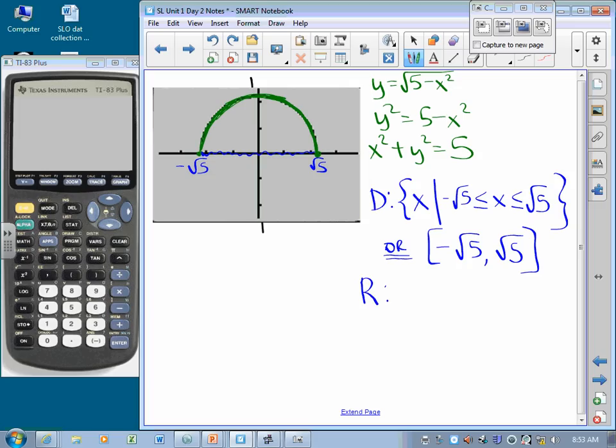For range, if a chicken shines light from the end of the positive x-axis, there's shadow cast all the way through here. That takes in all y values such that 0 ≤ y ≤ √5, or in interval notation, [0, √5].